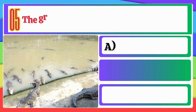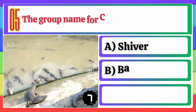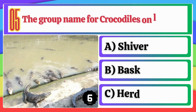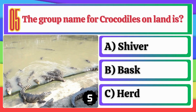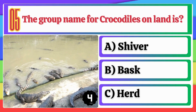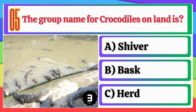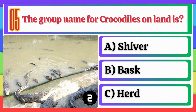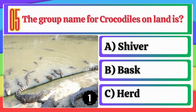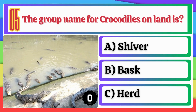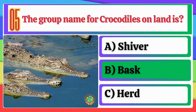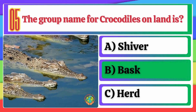The group name for Crocodiles on Land is? A. Shiver. B. Basque. C. Herd. Option B, Basque, is correct.